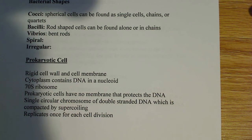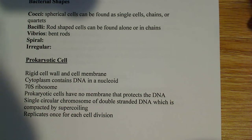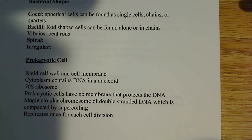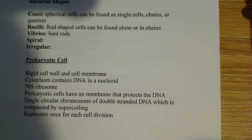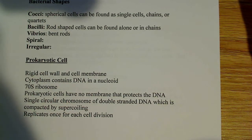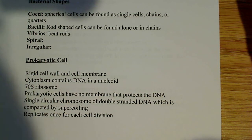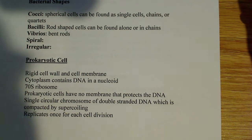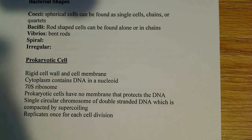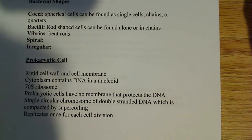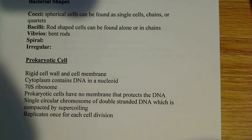Prokaryotic cells have a rigid cell wall and also a cell membrane. They have a cell wall, which is interesting because most animal cells don't. They have cytoplasm that contains DNA in a nucleoid — don't confuse it with the nucleus; it's not a membrane-bound structure, it's just a region of the cell where the DNA can be found. And they have a 70S ribosome, which is different from the eukaryotic 80S ribosome.